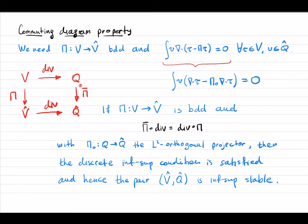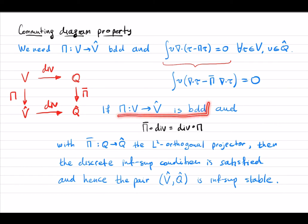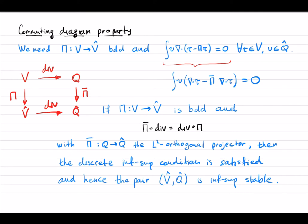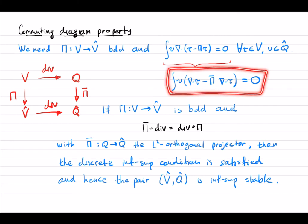Suppose there is an operator pi-bar that makes the commuting diagram commute. Then the Fortin property says we can apply the divergence first and then apply the projector pi-bar. In summary, if we have a bounded operator satisfying this commuting diagram property, with pi-bar sending Q to Q-hat equal to the L2 orthogonal projector, then the discrete inf-sup condition is satisfied and the pair is stable. This holds because v taken from Q-hat makes the difference orthogonal to Q-hat by definition of the orthogonal projector.